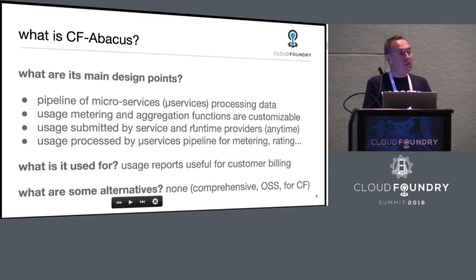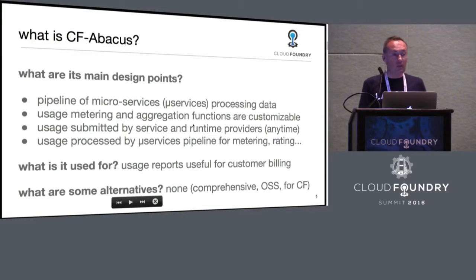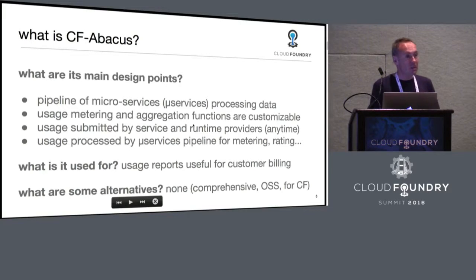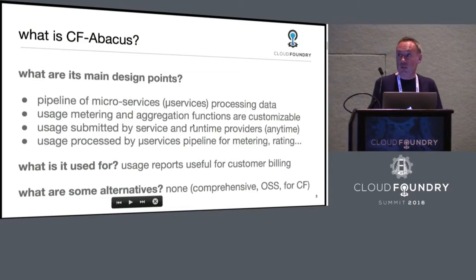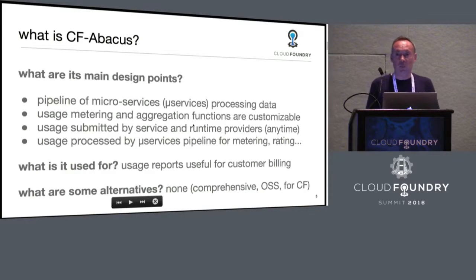Service providers submit usage to us, we process it through our pipeline, and at the end you see rated usage — basically the cost for that usage, aggregated along different dimensions. You may want to see usage at the organization level, application level, or space level. Maybe just for a specific service like the database, caching, or notification service. We provide flexible reports along all these dimensions.